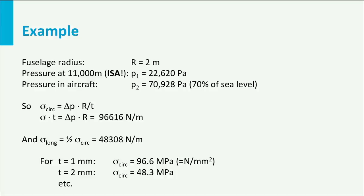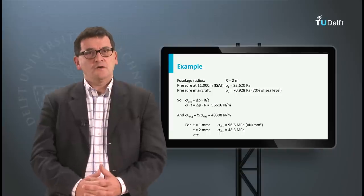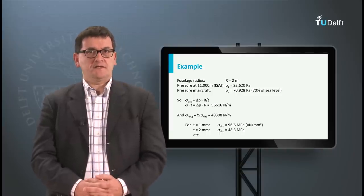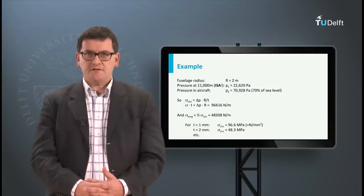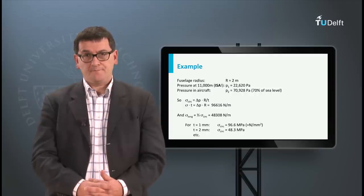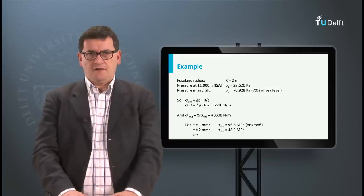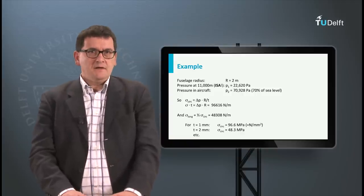Depending on the skin thickness we obtain different hoop and longitudinal stresses. The hoop stress is almost 100 N per square millimeter for a skin thickness of 1 millimeter, or nearly 50 N per square millimeter for a skin thickness of 2 millimeters. Note that the maximum allowable stresses for metal skins are close to 100 N per square millimeter, and these stresses result from pressurization load only. In reality we may have other loads as well, like bending and torsion moments.